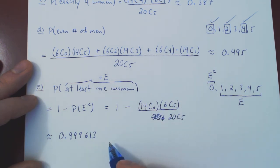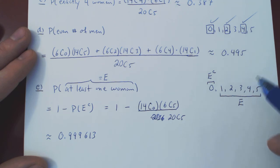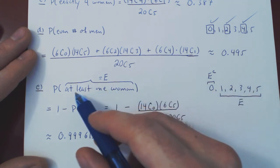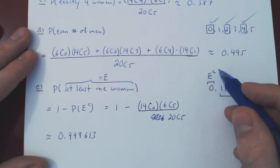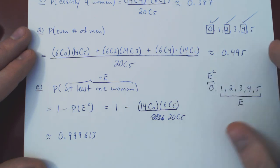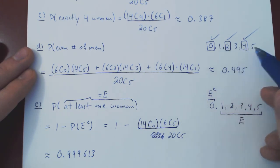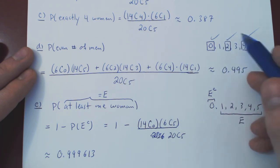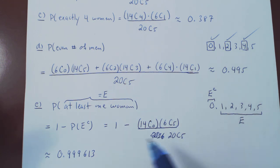So the odds of a committee with at least one woman are extremely high. Always keep this in mind: whenever the event you have requires a lot of work to tackle directly, fall back on the complement — when the complement gives you less work. In question D, the complement was the same amount of work, so there was no advantage. But in question E, there was a huge advantage to using the complement rule.